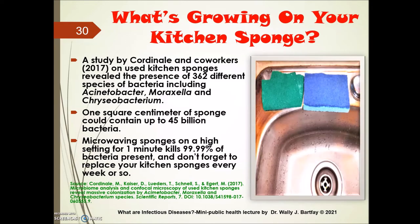What's growing on your kitchen sponge? One study examining bacteria on kitchen sponges found over 362 different species of bacteria, and that one square centimeter of sponge could contain up to 45 billion bacteria. From a public health lens, we can prevent potential infections by microwaving a wet sponge on high for one minute, which kills about 99.99% of bacteria present. We should also change kitchen sponges quite regularly.